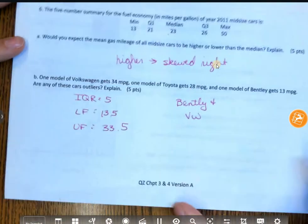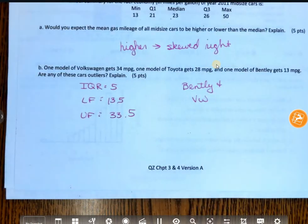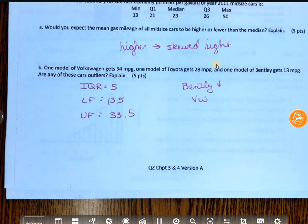Almost everybody got 6A correct. And the only issue we had on B, if you just say, are any of these cars outliers? Yes. They fall outside the fences. Context, which ones? Don't just say, yep, they're outliers, then walk away. Gotta tell me which ones are the outliers. Complete, clear, concise, and in context. Does that make sense?